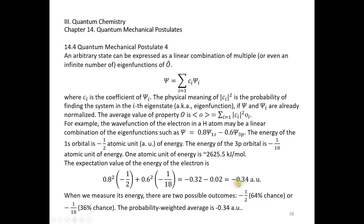But I do want to emphasize the expectation value is negative 0.34. Experimentally, if you have this kind of system with a hydrogen atom in both the 1s orbital and 3p orbital with 64% and 36% probability, and you can somehow prepare a million such identical systems and measure their energy, about 64% of those million hydrogen atoms will give you negative one-half, and 36% of the measurements will give you negative 1 over 18. Then you take the average — that's going to be negative 0.34.